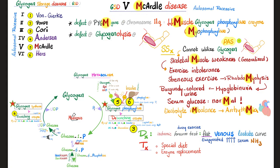Glycogen storage disease type 5, McArdle disease — think muscle. The defect is in the PYGM gene on chromosome 11Q. The 11 looks like the two legs of the M, and Q for McArdle. The deficiency is in muscle glycogen phosphorylase, also called myophosphorylase — contrast with type 6 where the problem is in liver glycogen phosphorylase. Symptoms include muscle weakness, because the muscle cannot utilize its own glycogen. Glycogen piles up, causing generalized muscle weakness and exercise intolerance. Strenuous exercise can destroy muscles — rhabdomyolysis.